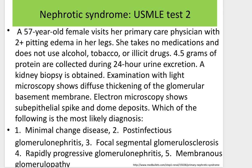Test 2: A 57-year-old female visits her primary care physician with middle-range pitting edema in her legs. She takes no medications and does not use alcohol, tobacco, or illicit drugs. 4.5 grams of protein are collected during 24 hours' urine excretion. A kidney biopsy is obtained. Light microscopy shows diffuse thickening of the glomerular basement membrane. Electron microscopy shows subepithelial spike-and-dome deposits. Which of the following is the most likely diagnosis? (1) Minimal change disease, (2) Post-infectious glomerulonephritis, (3) Focal segmental glomerulosclerosis, (4) Rapidly progressive glomerulonephritis, (5) Membranous glomerulopathy.